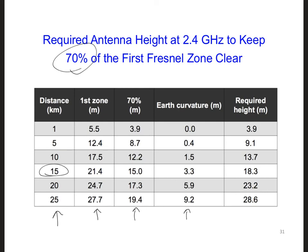Putting all this together, the required height of the antennas to keep 70% of the first Fresnel zone clear as well as the Earth's curvature out of the way is listed in this last column. So you see that we get 18.3 meters.